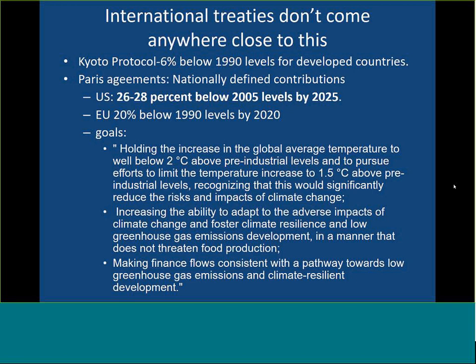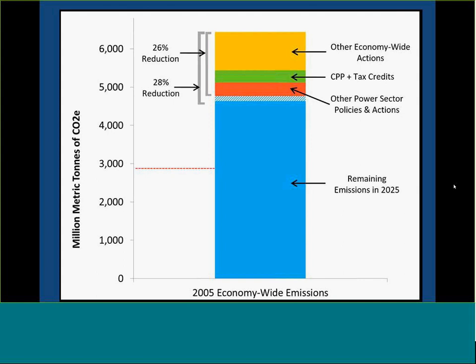We've got the Paris Agreement, which said countries should do the best they can to prevent global temperature from rising above 2 degrees Celsius. But it's voluntary. Before Trump pulled the US out, we were supposed to reduce emissions 26 to 28 percent below 2005 levels by 2025. But when you look at the actual amount of emissions, the US is reducing our emissions by less than a third.